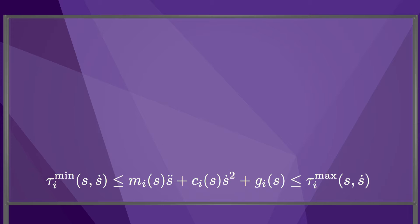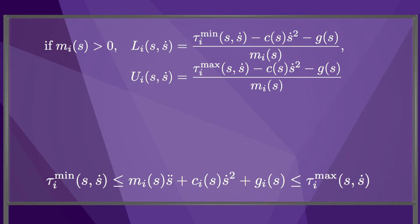To determine the i-th actuator's limits on s double dot, we subtract c_i times s dot squared and g_i from all three expressions, then divide by m_i. Since m_i could be positive or negative, there are two possible cases. If m_i is positive, then L_i, the lower limit on s double dot, and U_i, the upper limit on s double dot, are given by these equations.